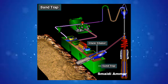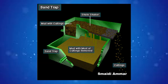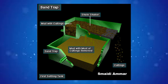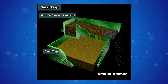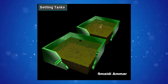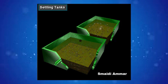The sand trap is the tank directly below the shale shaker. The shale shaker removes most of the cuttings from the mud, but some are so small the shaker cannot trap them — these fall into the sand trap. The sand trap is the first settling tank, and crew members have to clean it regularly to remove built-up solids. Some small or old rigs may have two or more settling tanks, which allow solids to settle out.